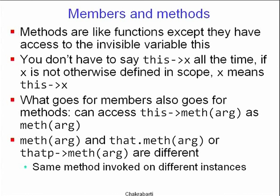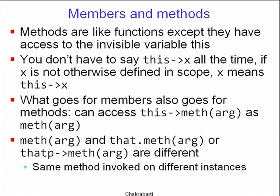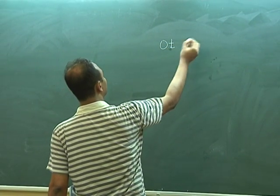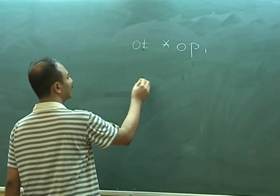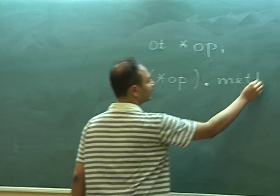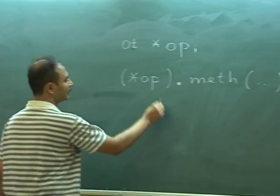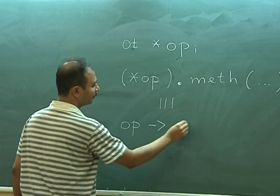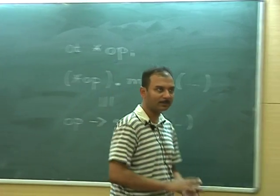Calling a method on the current object versus calling it on some other object — they are totally different. Although it is the same method, it is being invoked on two different object instances, even if those instances belong to the same class. If you have an 'object_type* object_pointer', then '*object_pointer' is of type object_type, so you can invoke '.method()' on it. That is syntactically equivalent to 'object_pointer->method(args)'. That is the basic syntax requirement of object-oriented programming — that is how members and methods work.